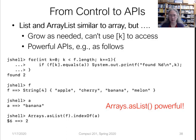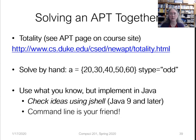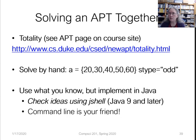For the totality APT, you want to find the sum of all the even index positions and the sum of all the odd index positions. Based on what the s-type was — odd, even, or all — you return the odd sum, the even sum, or you add them together for the total sum. If you'd like to see an APT being solved, there's another video of me solving the gravity APT which goes through the whole process.